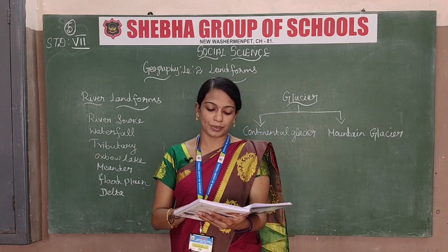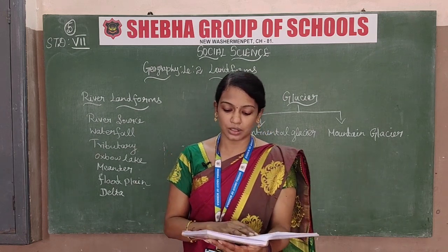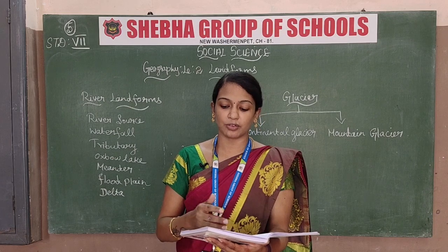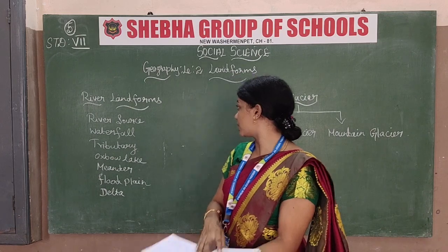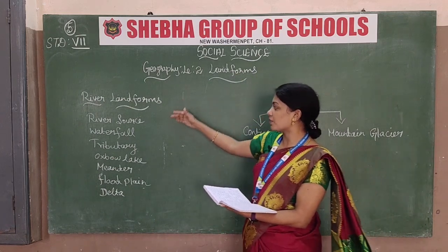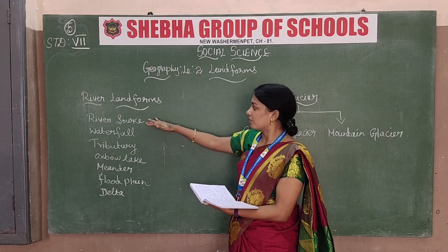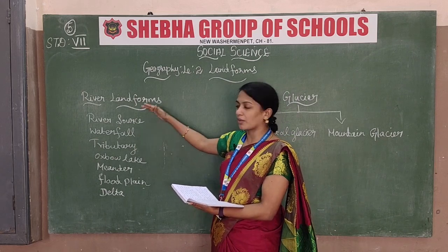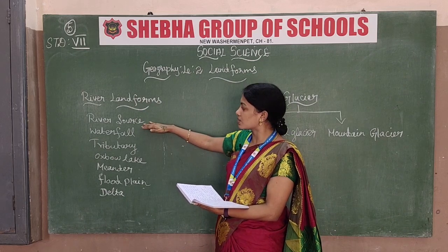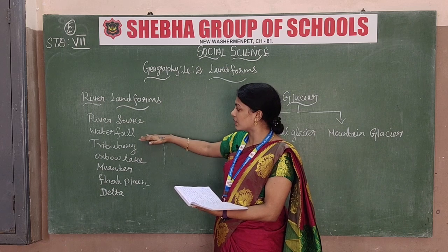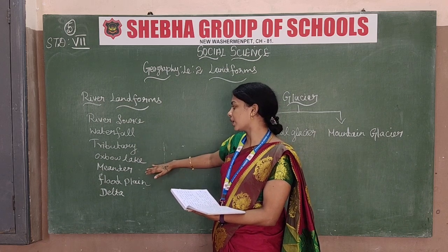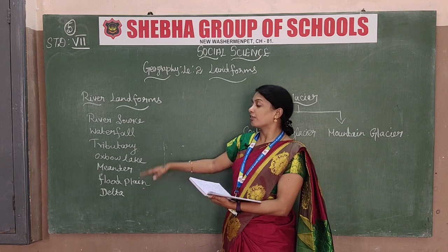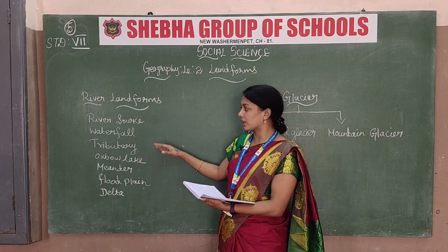Next topic is the river. The river is mostly originated from mountains. Before going to the river, I will show you the river landforms. First is river source, waterfalls, then from the river we have river source, waterfalls, tributary, oxbow lake, meander, floodplain, and the delta. From the river we get all of these.